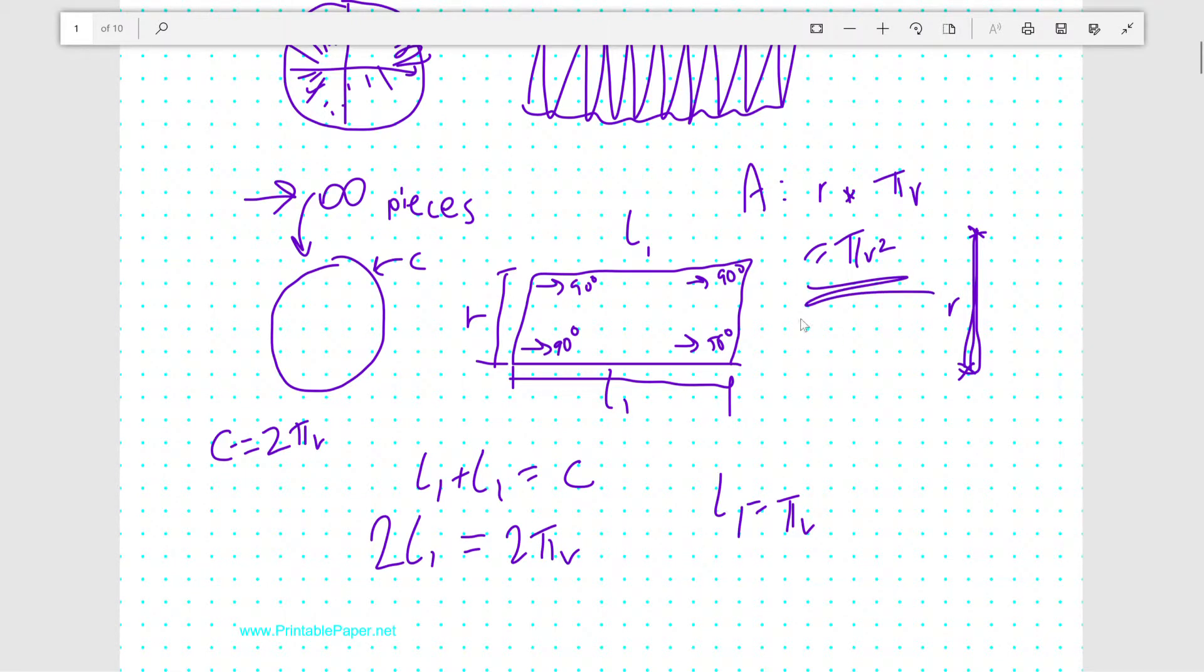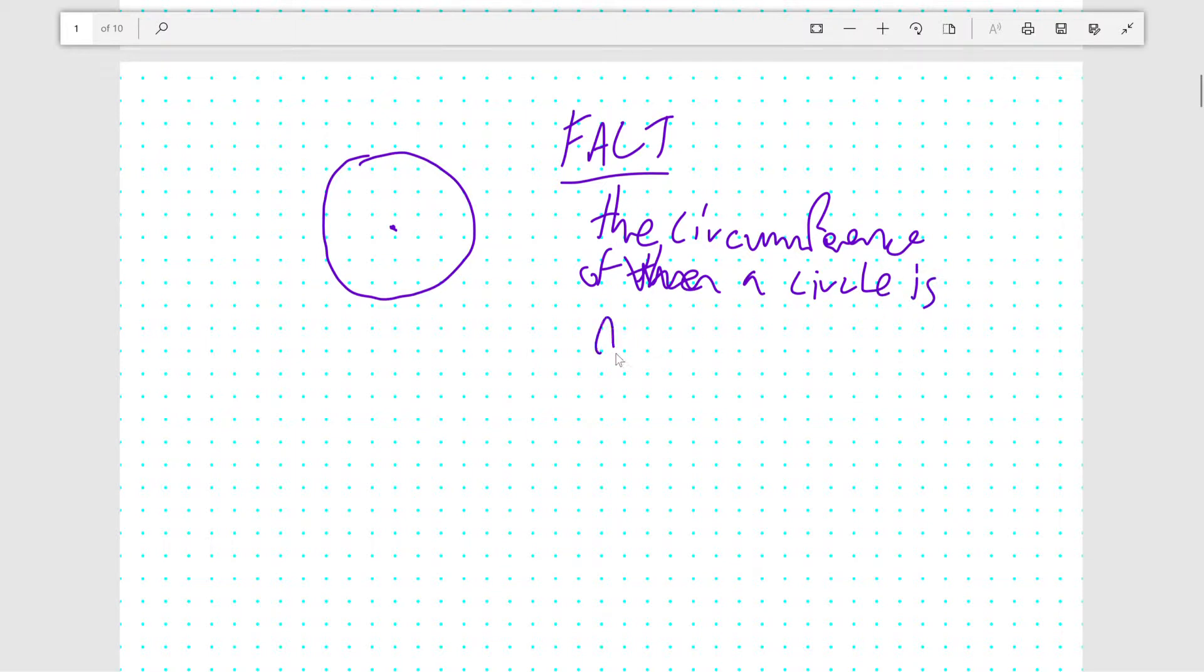That's one way of proving that the area of the circle is pi r squared. Another way has to do with taking infinitely many concentric rings from the very middle of the circle. Say you have this circle here and let's put a dot at its center. The circumference of a circle is always 2 pi times the radius of the circle.